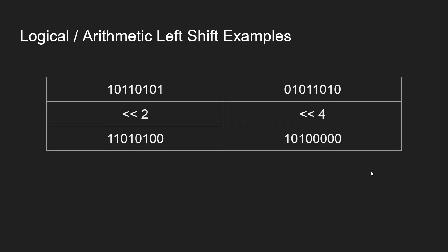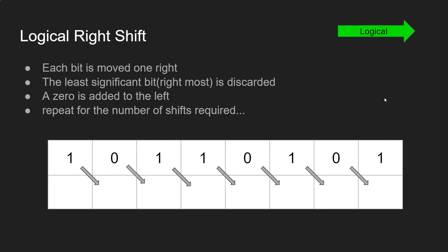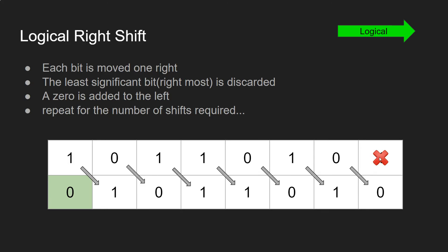So that is how to do a logical or arithmetic left shift. Now what about a right shift? Logical and arithmetic right shifts work slightly differently. With the logical right shift, it's quite similar to the left shift — you move each digit along by one, but this time shifting them to the right. The number on the right hand side gets discarded, and just like before we fill the left hand side with a zero.